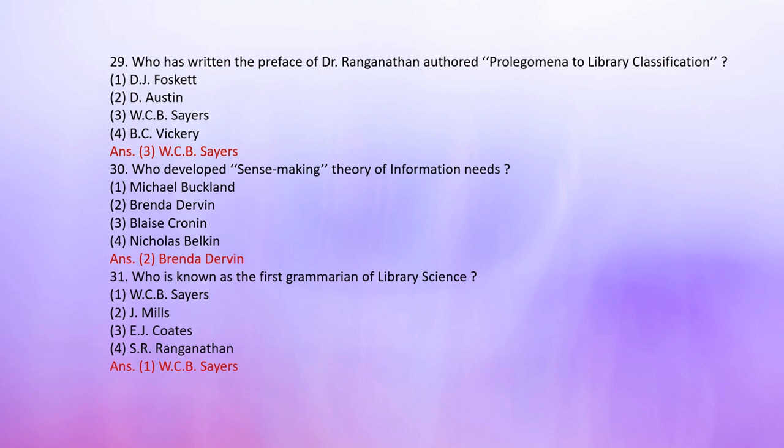Number 30: Who developed the sense-making theory of information needs? 1. Michael Buckland, 2. Brenda Dervin, 3. Blaise Cronin, 4. Nicholas Belkin. The correct answer is 2: Brenda Dervin.